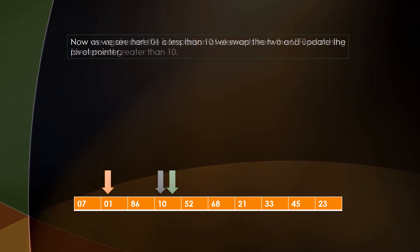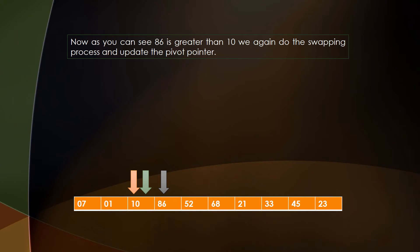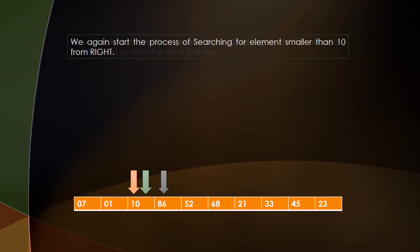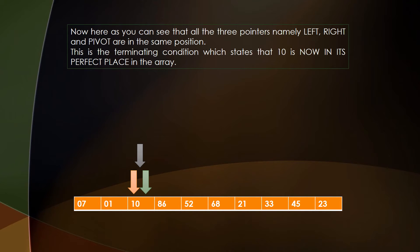Next, we compare elements from the left which are greater than 10. We find that 86 is greater than 10, so we swap the positions of 86 and 10 and update the pivot pointer. Moving ahead from the right, all three pointers are now pointing at the same location — this is the terminating condition, which means 10 is now in its perfect sorted position in the array.